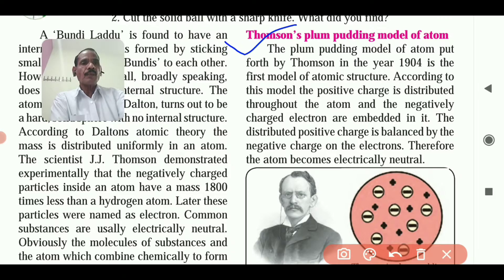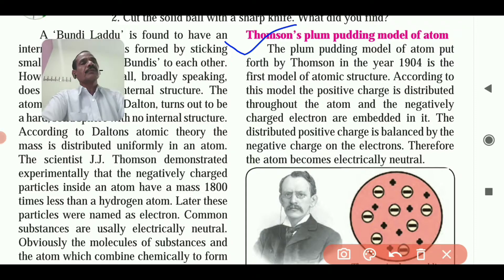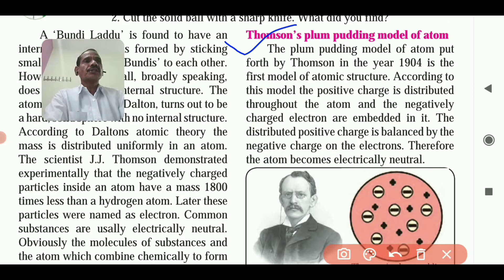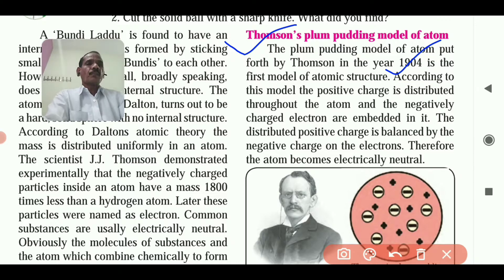The Plum Pudding Model of an atom put forth by Thomson in the year 1904 is the first model of atomic structure. According to this model, the positive charge is distributed throughout the atom and the negatively charged electrons are embedded in it.